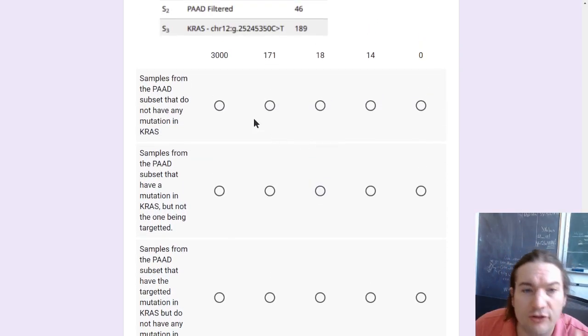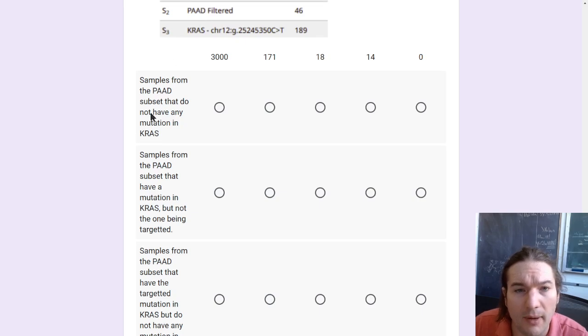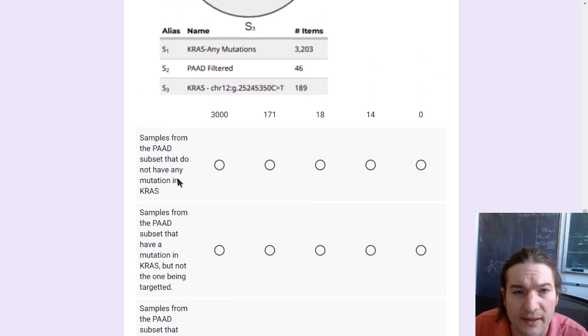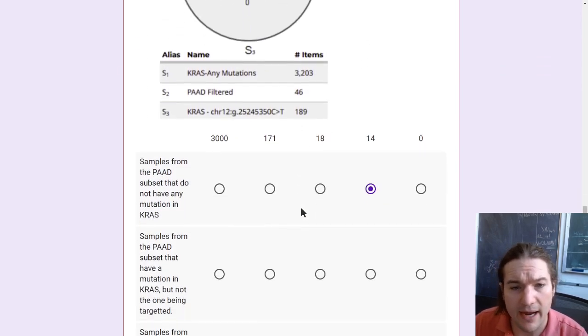So in the end, I'm just trying to match some. So I say samples from pad subset that do not have mutation in KRAS. So that's going to be overlapping with our S2, and not overlapping with S1 or consequently S3, because S3 is a type of mutation in KRAS. So that was that 14 at the top right. That's going to be one of our comparison groups.